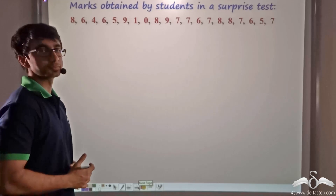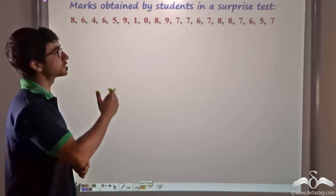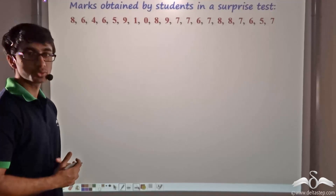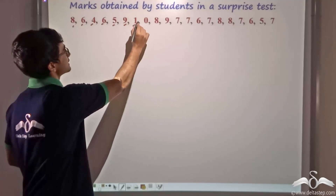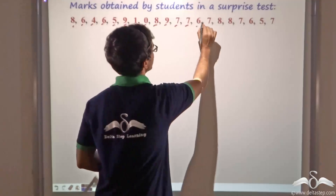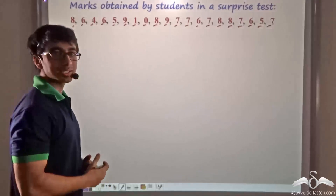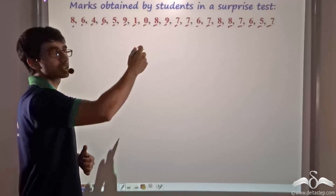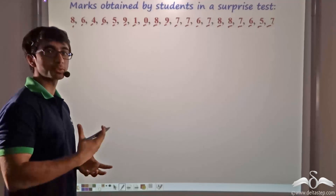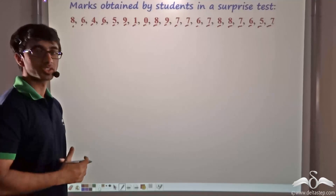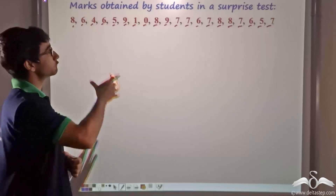Now let us consider a scenario. A teacher has conducted a surprise test on a total of 10 marks for a certain number of students — here the number of students is 20. So there are 20 students who have obtained respective marks out of 10, as you can see. The teacher wants to find out how well the class has performed on average, or what is the average score of the class. To find this out, the teacher calculates the mean of the marks.